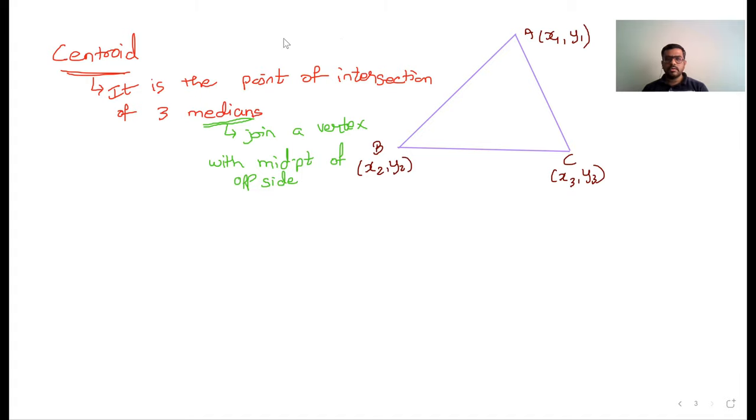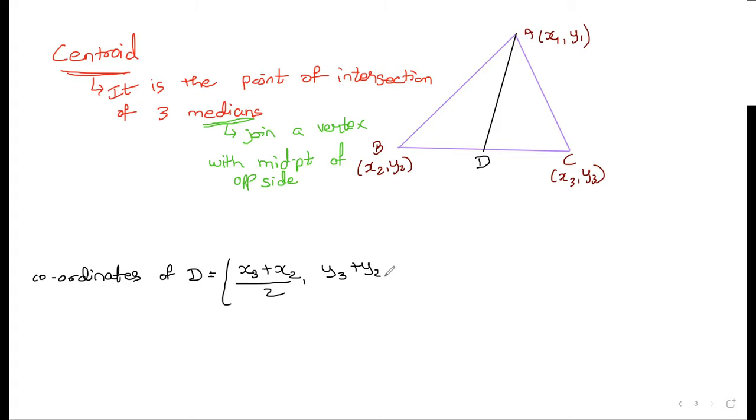So let us draw one median in this. If AD is the median, then what are the coordinates of D? D is X3 plus X2 upon 2, Y3 plus Y2 upon 2.